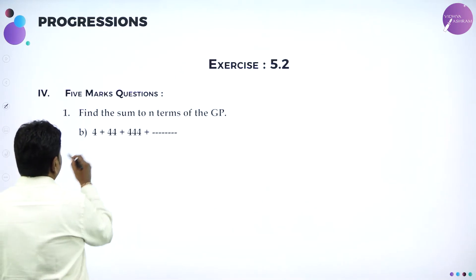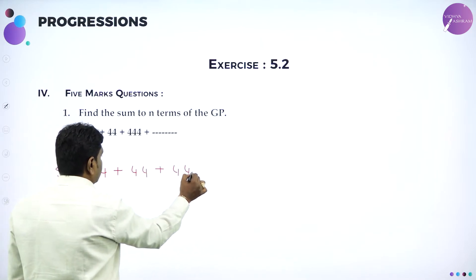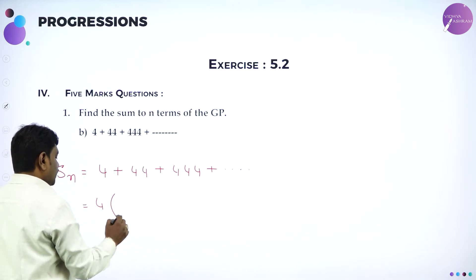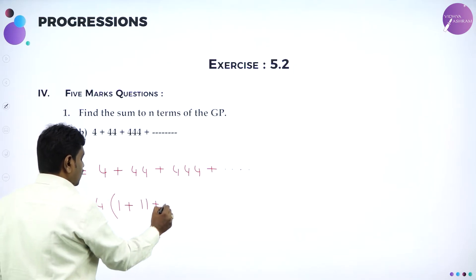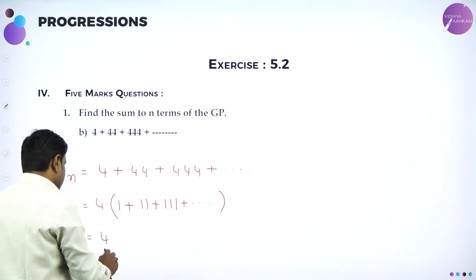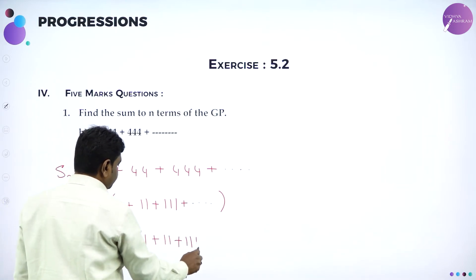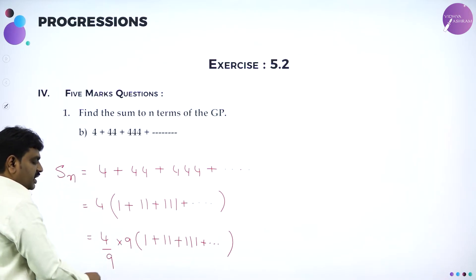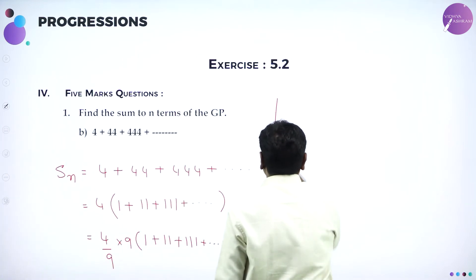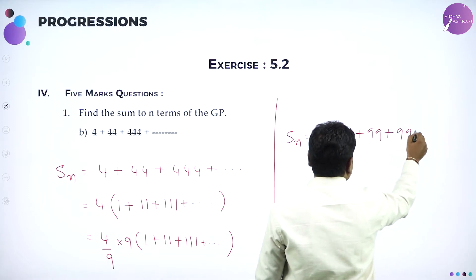Same technique we can use for the next problem. Sn for 4 plus 44 plus 444 and so on till n terms. You can see: take 4 common — it will become 1, 11, 111 and so on. The internal terms are same. What should you do? Divide and multiply by 9. So 4 by 9 into (9×1 + 9×11 + 9×111...) gives: Sn = 4/9 × (9 + 99 + 999 + ...) till n terms.